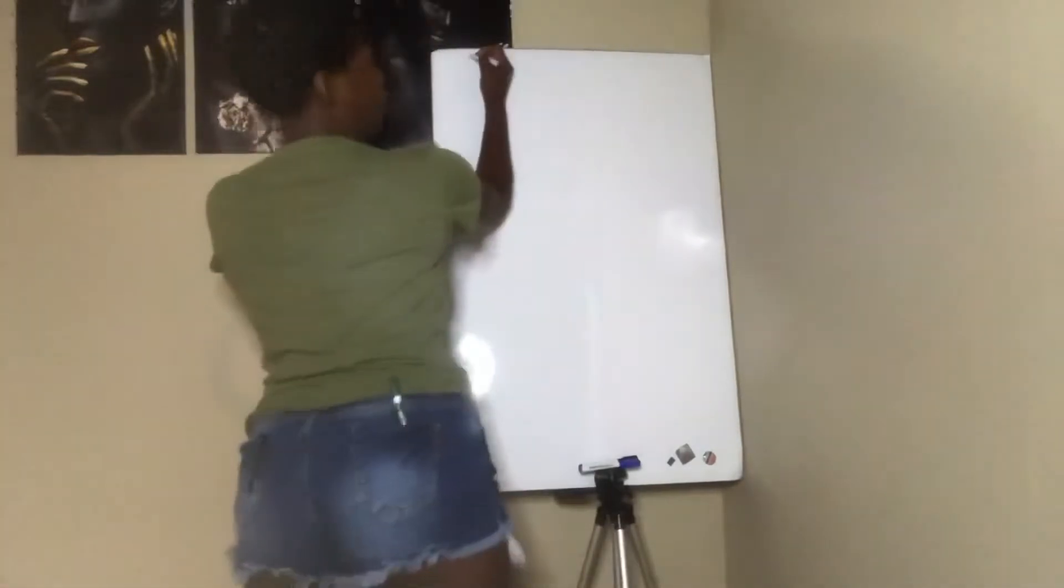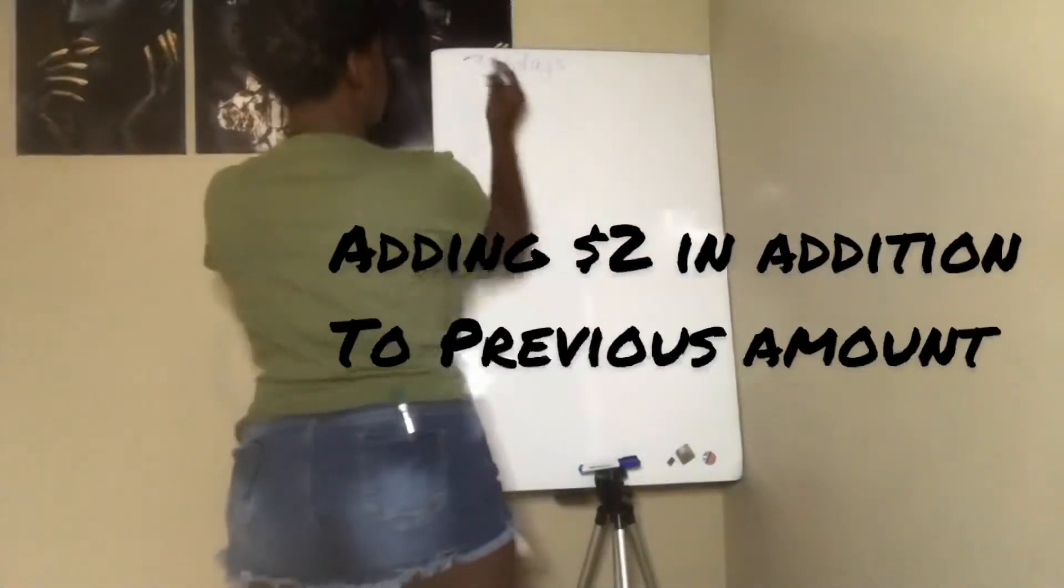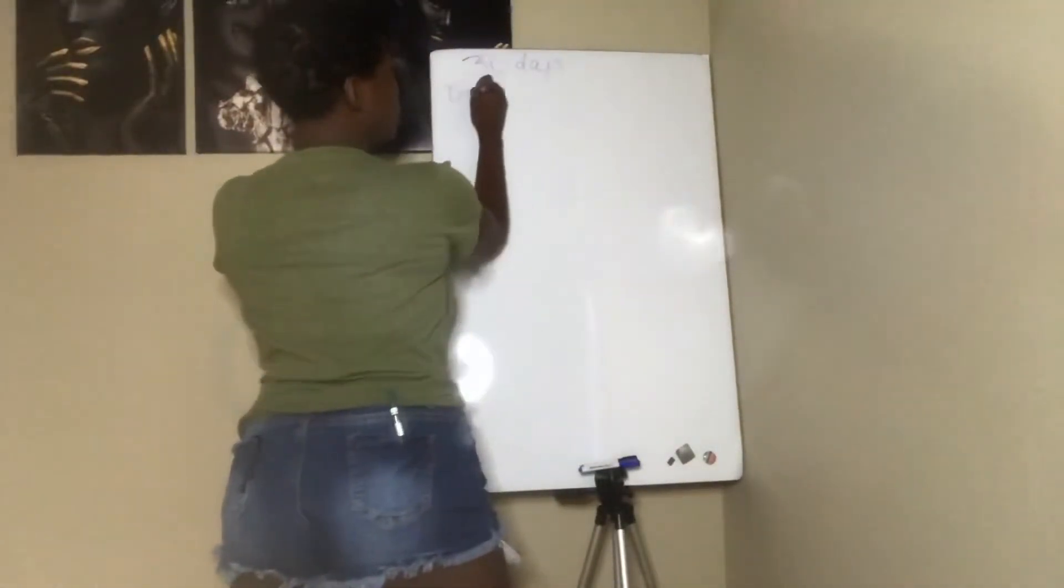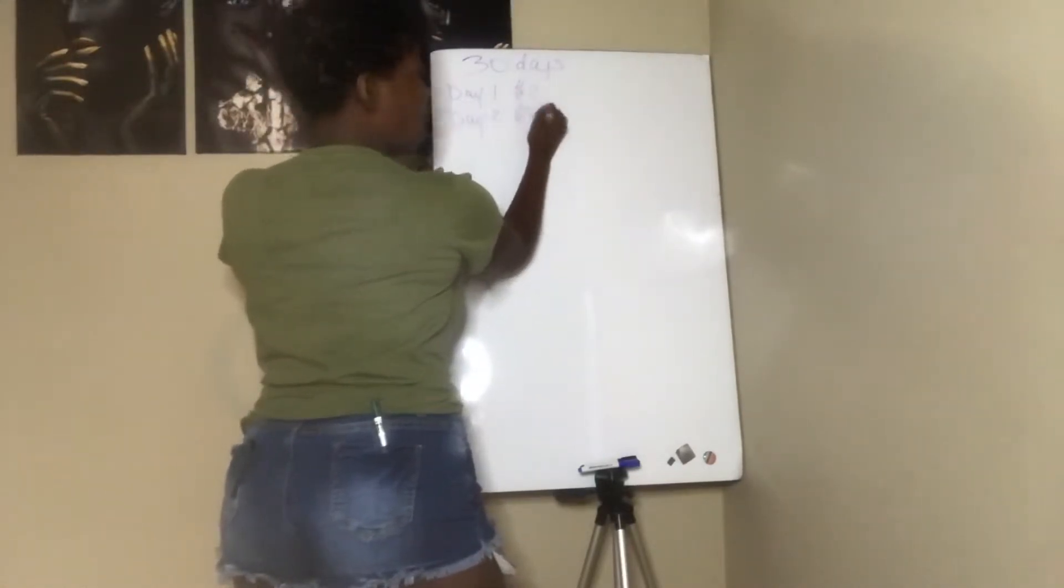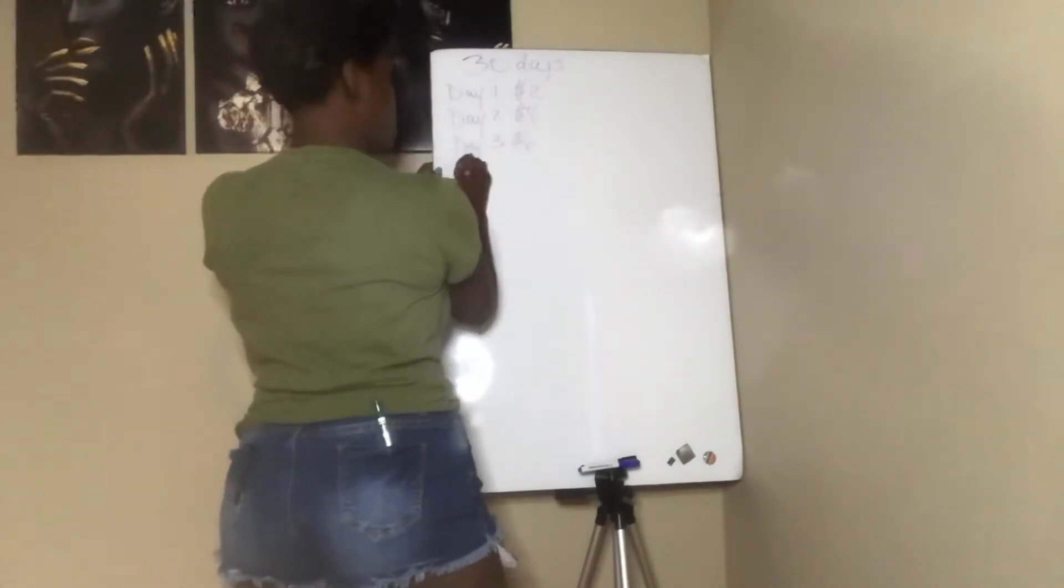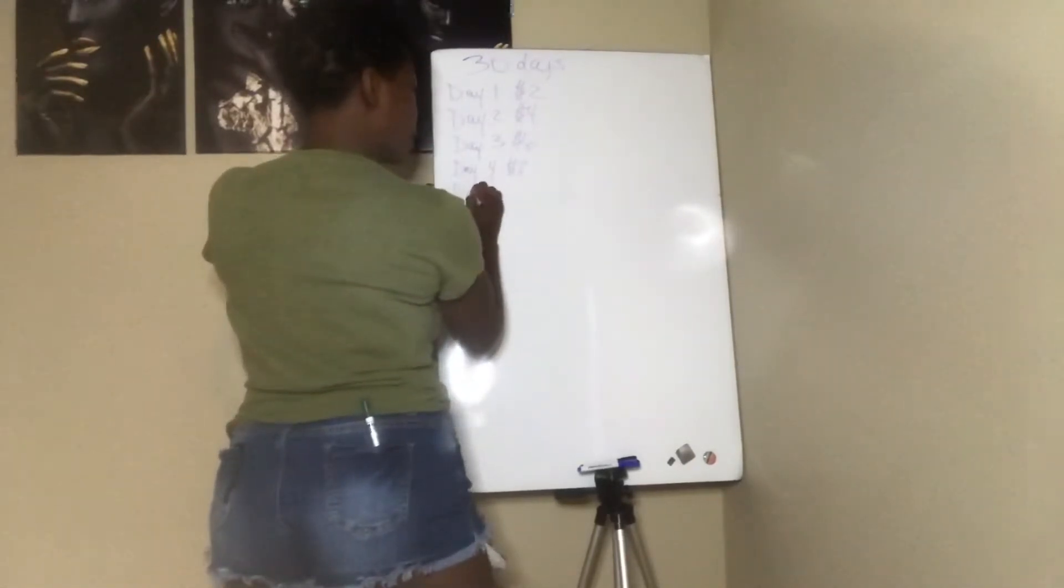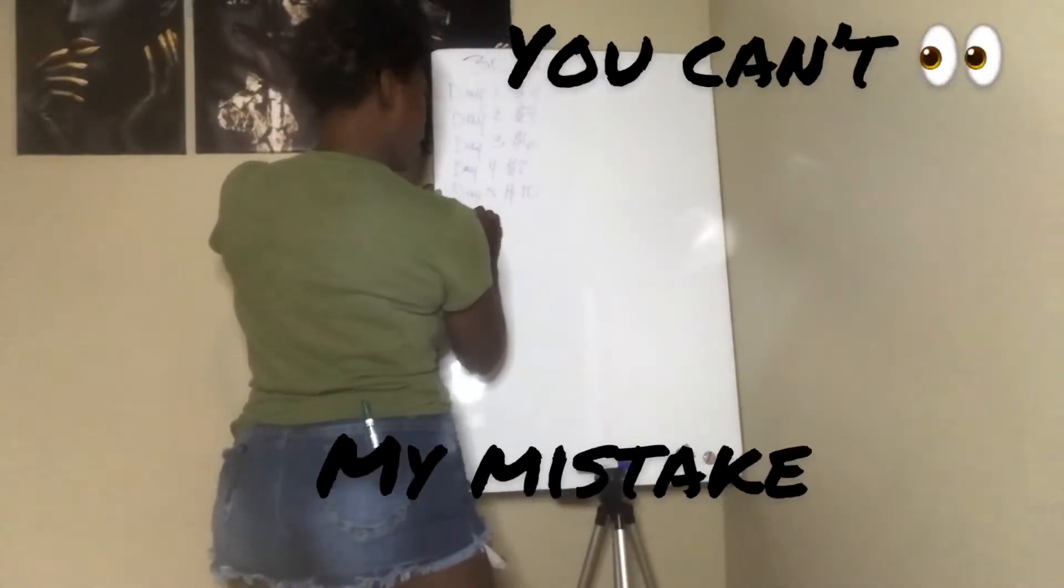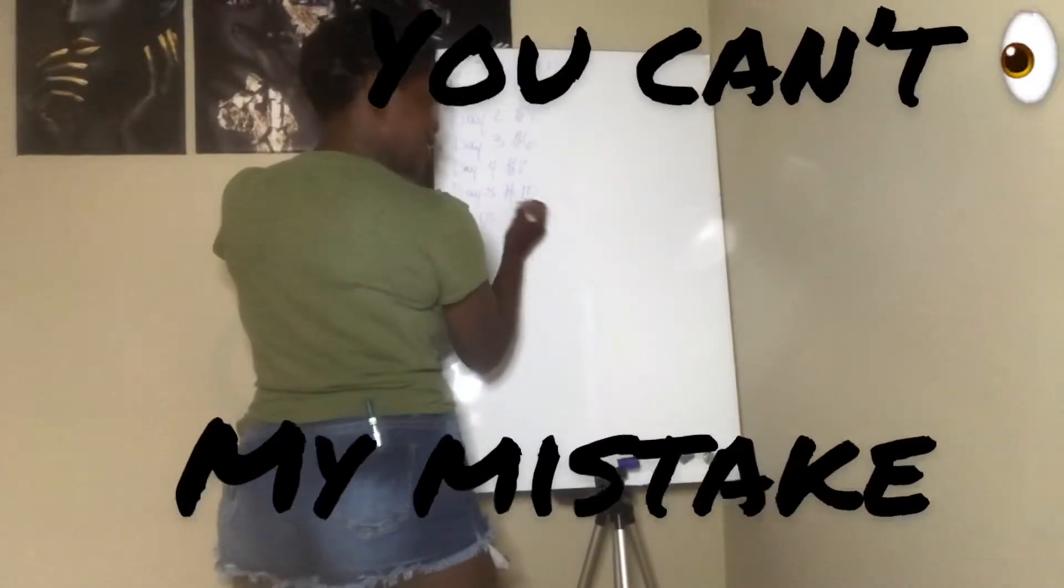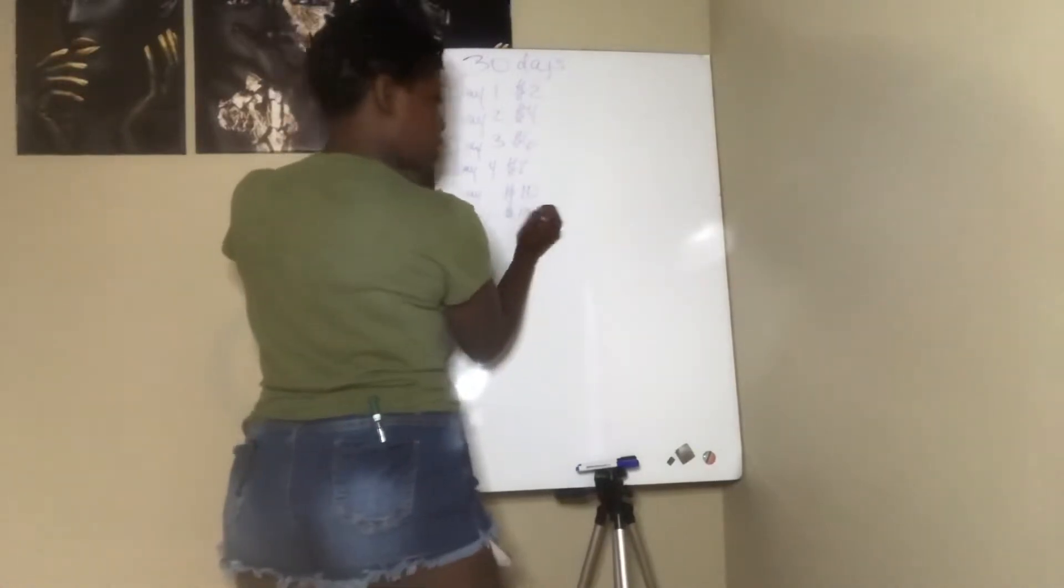I'm going to start with 30 days. It's in increments of twos. Day one is going to be $2, day two is going to be $4, day three is going to be $6, day four is going to be $8, and it's basically so on and so forth. I'm going to get through this whole thing. By the time I finish, you will see the days and how much it's going to be there.